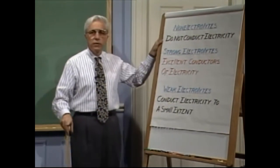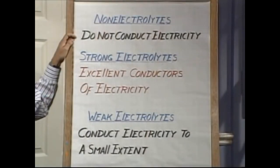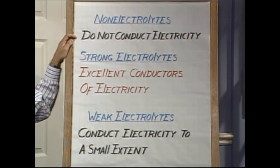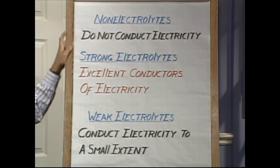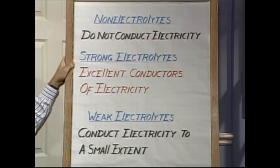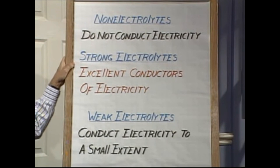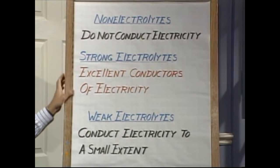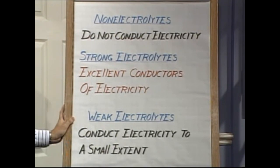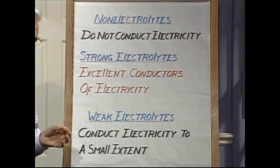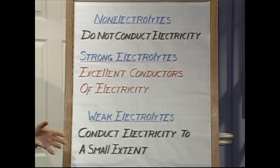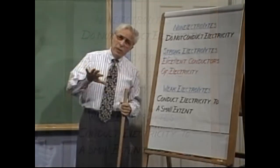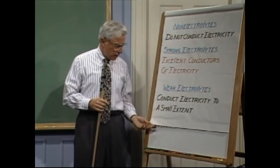A non-electrolyte is defined as a substance which, when you dissolve it in water, produces a solution that does not conduct electricity. A strong electrolyte is a substance which, when you dissolve it in water — we will assume it's soluble — is an excellent conductor of electricity. And a weak electrolyte is a substance which, when dissolved in water, the solution conducts but doesn't conduct electricity that well — it just conducts electricity a little bit.